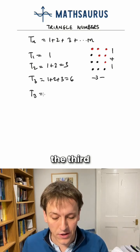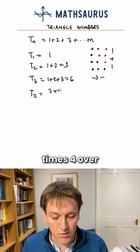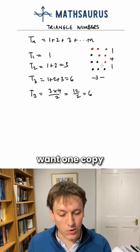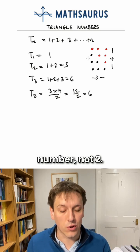So I could also work out the third triangle number as 3 times 4 over 2, which is 12 over 2, which is 6, because I only want one copy of the triangle number, not 2.